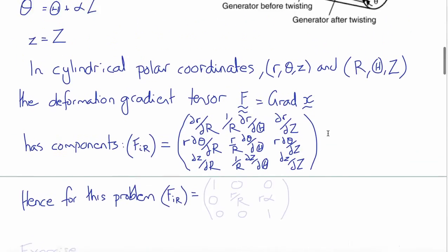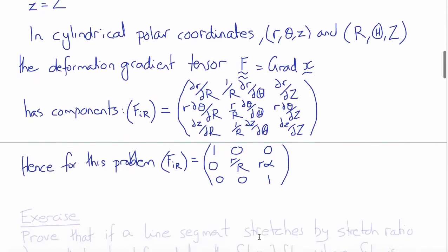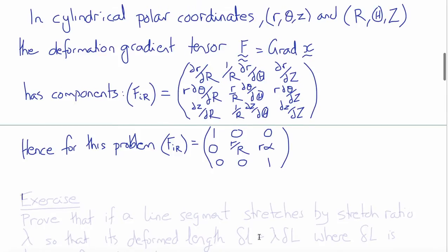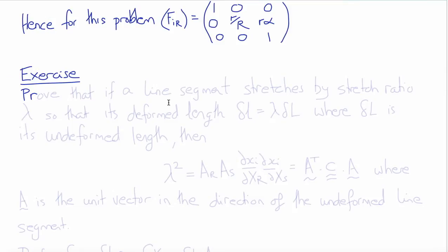Applying this to the torsion displacements: del(r)/del(R) is 1, del(r)/del(Theta) and del(r)/del(Z) are 0. Del(theta)/del(R) is 0, del(theta)/del(Theta) is 1 with an r/R factor giving 1, and del(theta)/del(Z) is alpha giving r*alpha. Del(Z)/del(Z) is 1, and del(Z)/del(R) and del(Z)/del(Theta) are 0. So now we have the deformation gradient for this problem, and we can proceed to compute the strain tensors and the right and left Cauchy-Green deformation tensors.